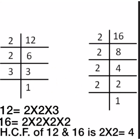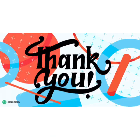One more example: HCF of 12 and 16. The prime factors of 12 are 2 × 2 × 3, and the prime factors of 16 are 2 × 2 × 2 × 2. The common prime factors are 2 × 2, so the HCF of 12 and 16 is 2 × 2 = 4. That's all for today — we will meet in the next video with a new concept. Stay connected, bye!